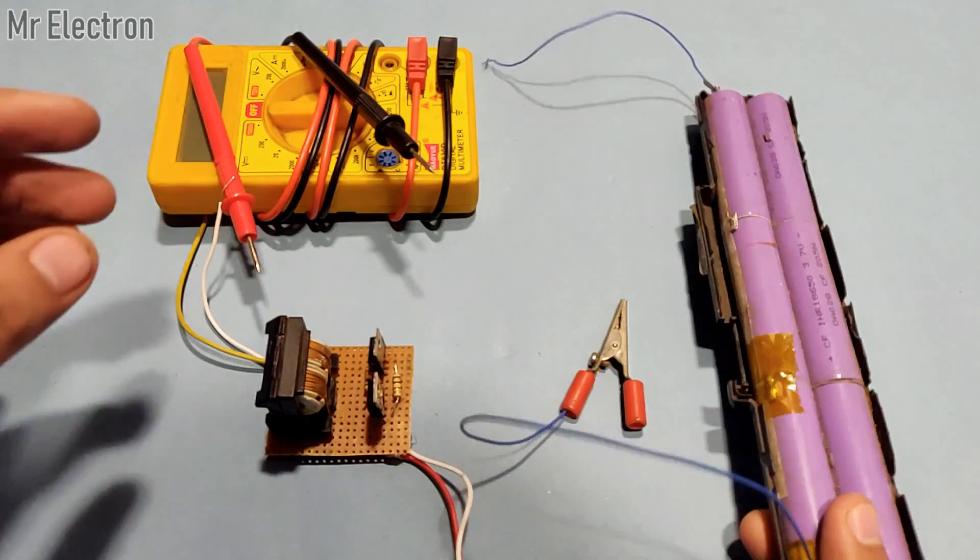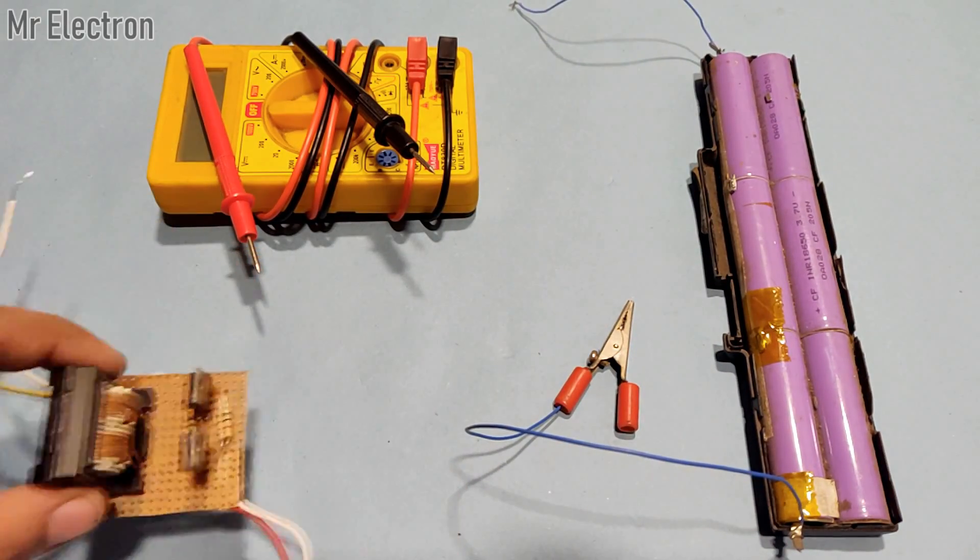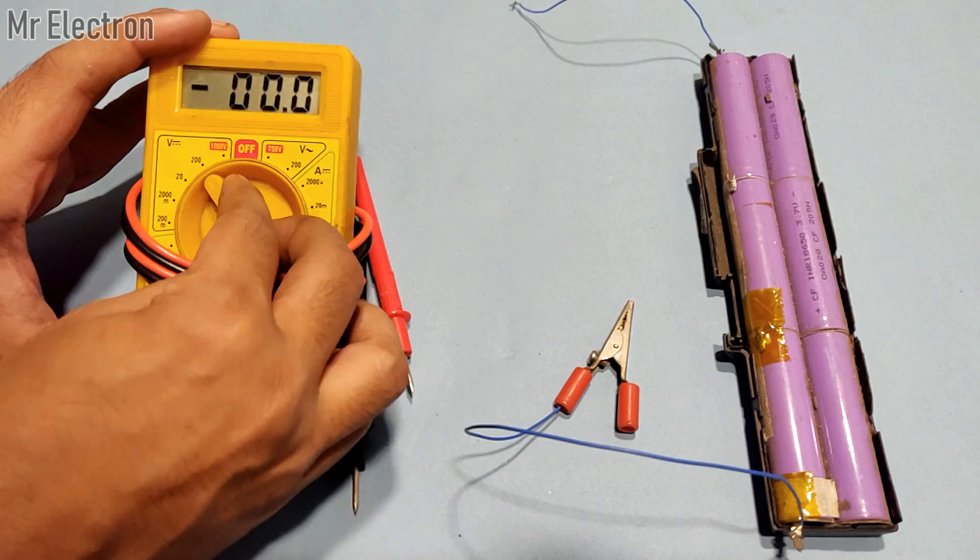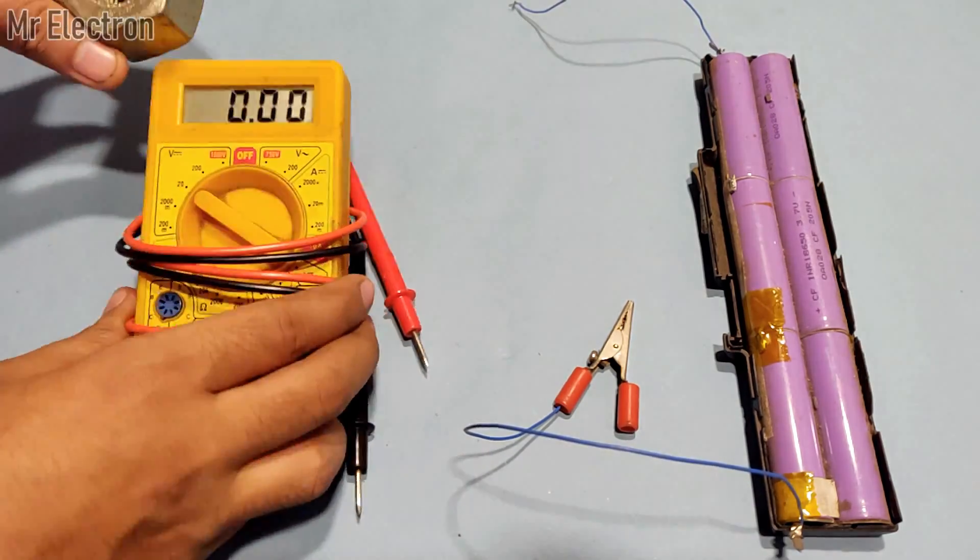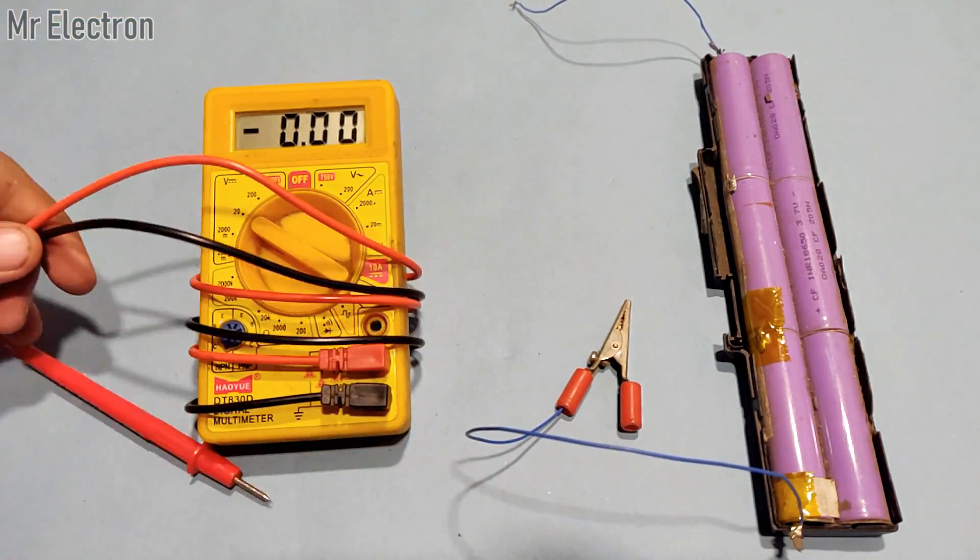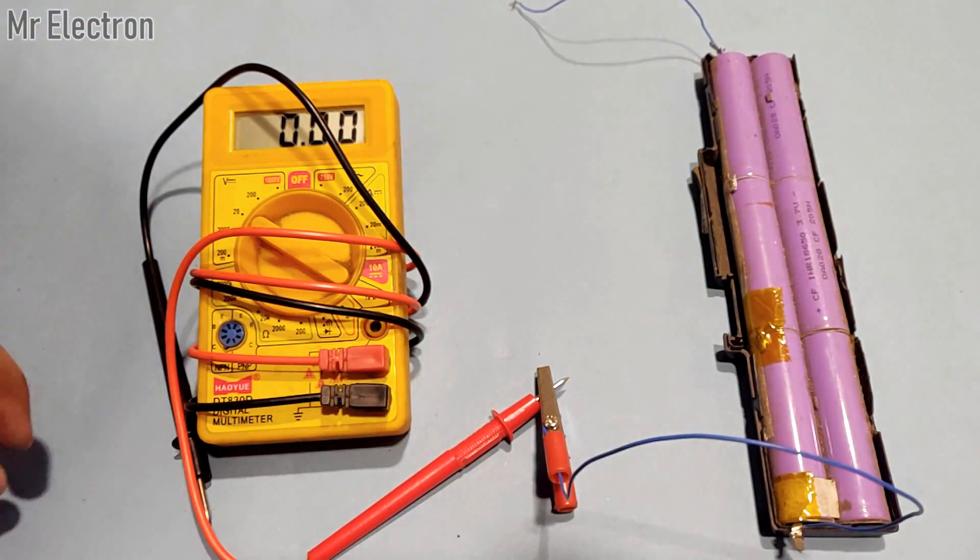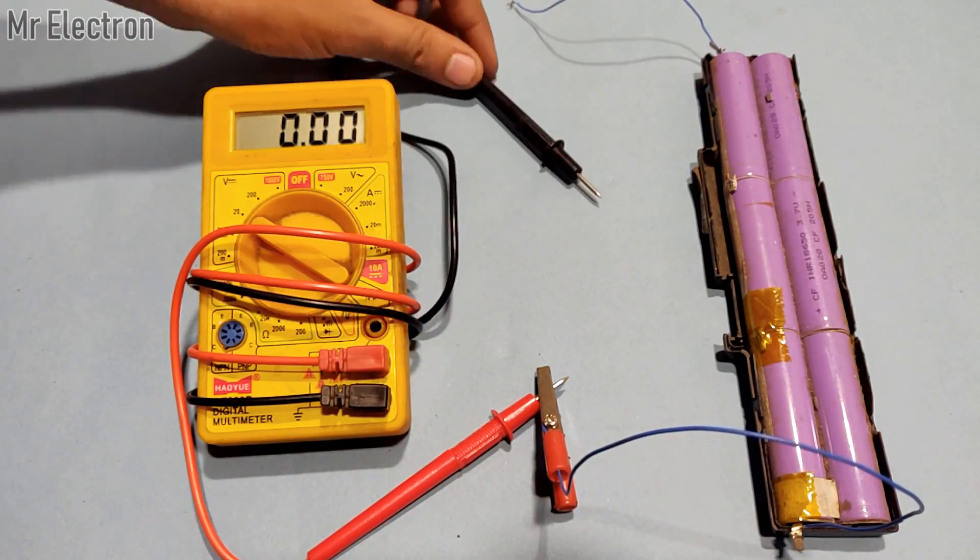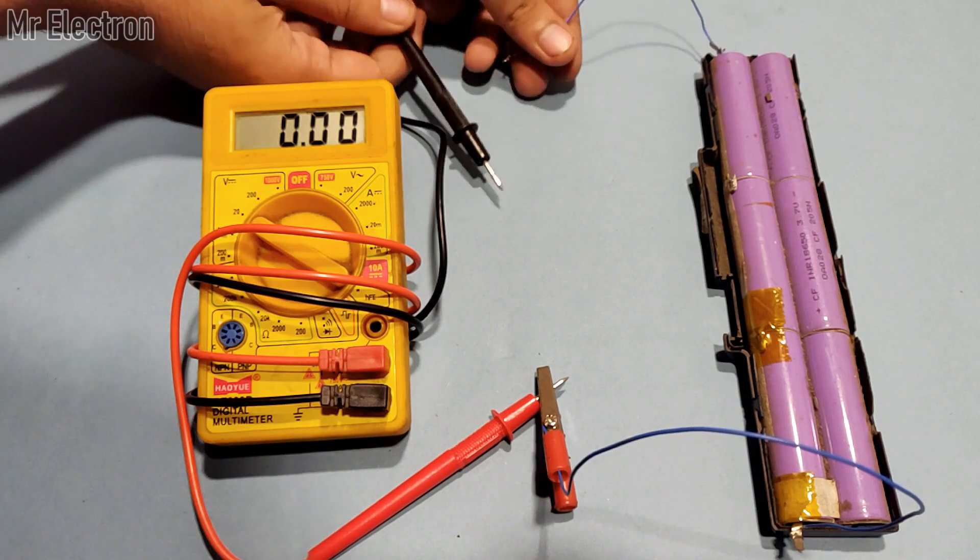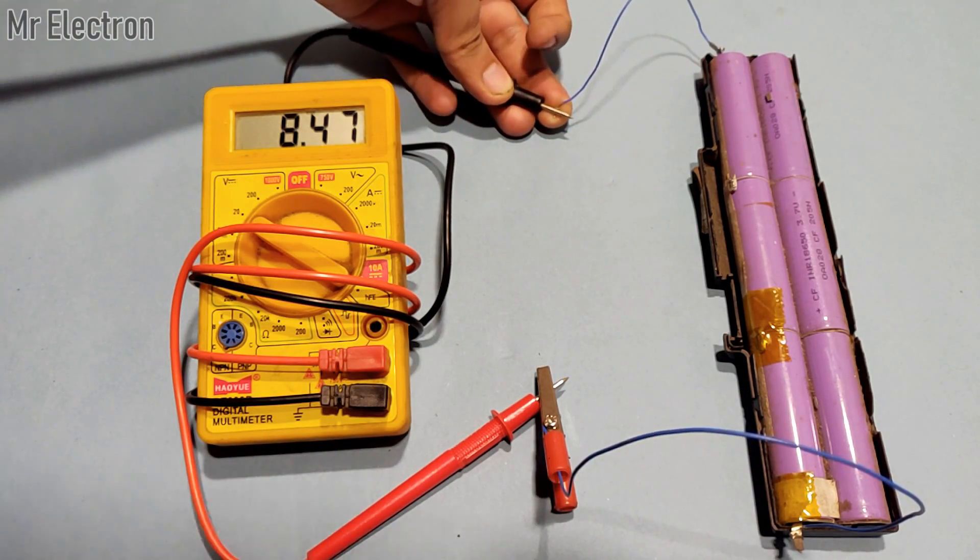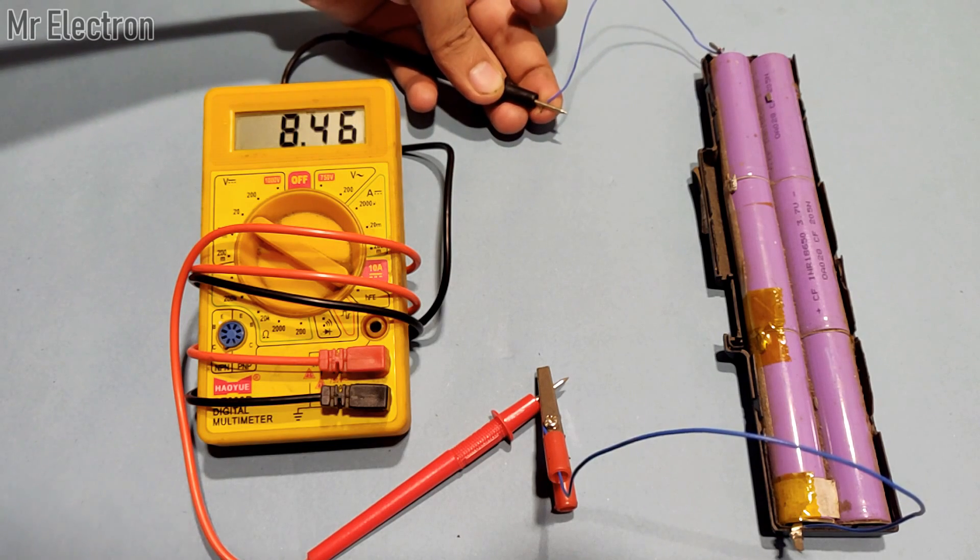I will show you the current voltage across the terminals of this laptop battery with the help of a multimeter. As you can see, the multimeter is indicating 8.47 volts DC.